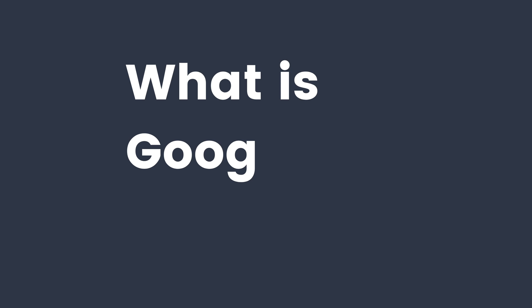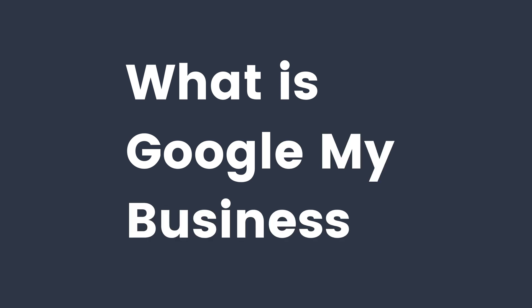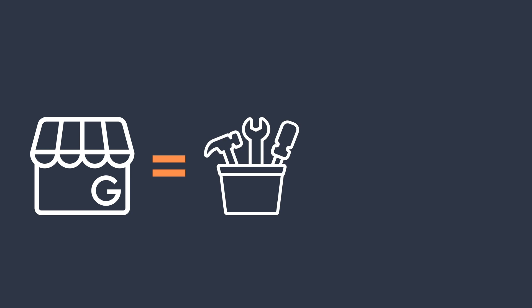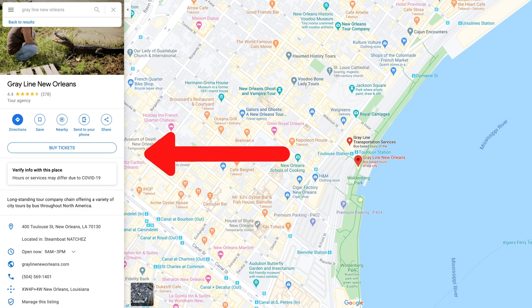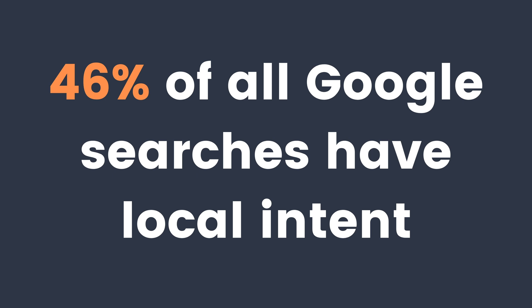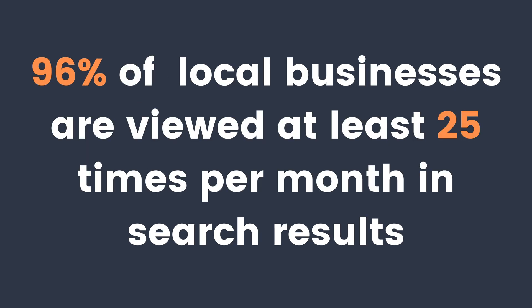Your first question might be: what is Google My Business? In short, it is a set of tools that allows you to create, claim, manage, and optimize your business listing that appears on Google Maps and Google Search. It's an incredibly important part of local SEO on Google, as this listing can increase your chances of appearing in Google Maps, Google's local pack, and local finder.